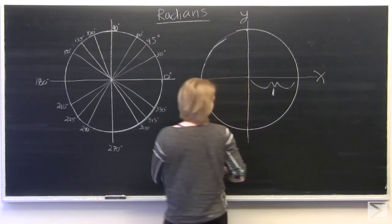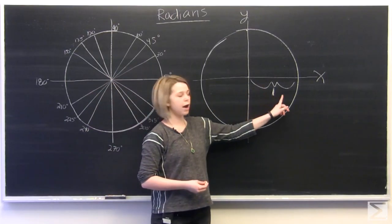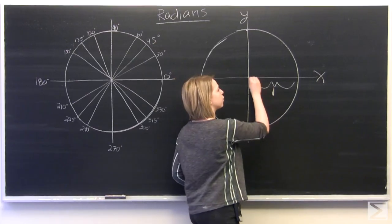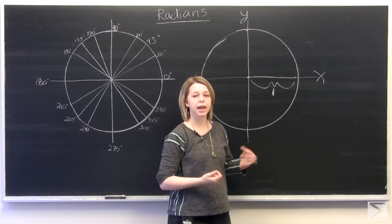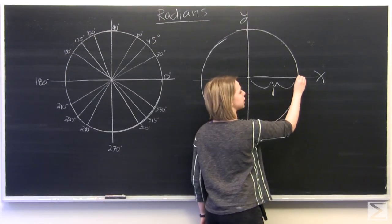And so on our coordinate plane here, we have our radius of 1. But what happens if we want to measure a radian instead of a degree measurement? So what we'll do to visualize this, we'll take our radius.